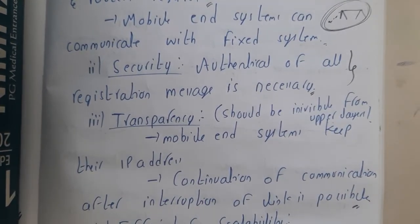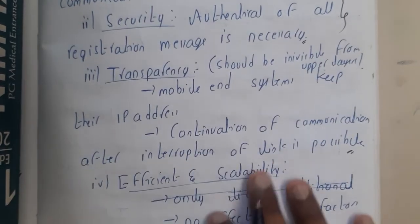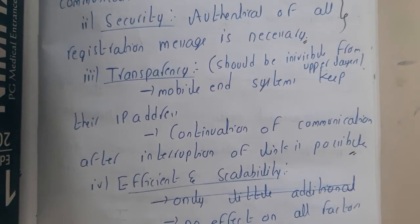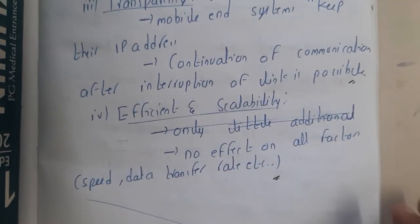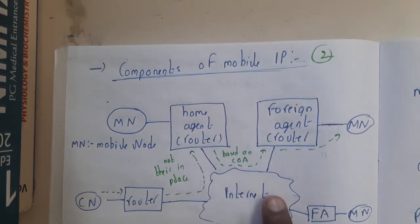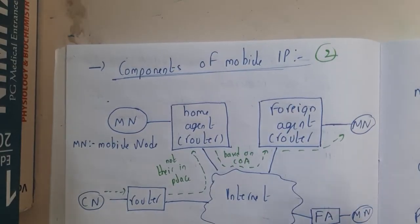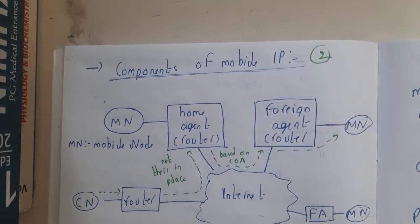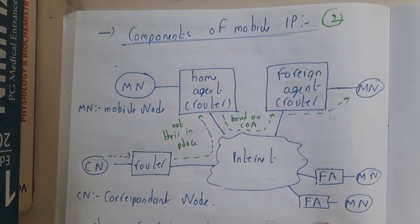Continuation of communication after interruption of the link is possible — whenever you want to interrupt, turn off your Wi-Fi or anything, you can do so. Efficient and scalable: if you want to increase your speed or anything, you will not face any issues. This is a basic introduction to Mobile IP. In the next lecture we will discuss the components of Mobile IP — how a user can move from one location to another without any issue, and how the logic works.